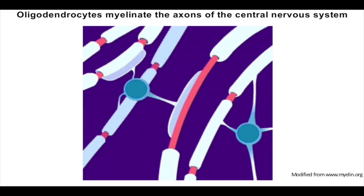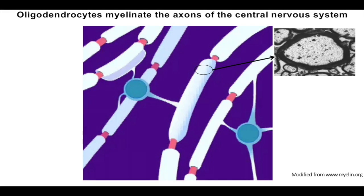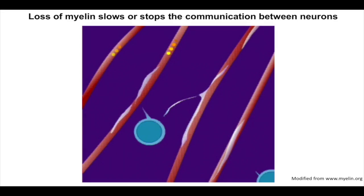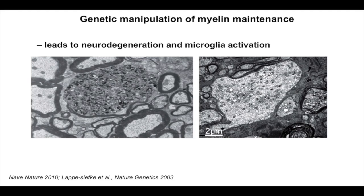In white matter we mainly deal with oligodendrocytes, which wrap membrane around axons forming the compact myelin sheath. This intimate relationship between the oligodendrocyte and the axon increases propagation speed and synchronizes inputs from multiple neurons. When oligodendrocytes or myelin are damaged, it slows propagation and can lead to physical, mental disorders, neurodegeneration, axonal swelling, microglia activation, and cognitive decline.